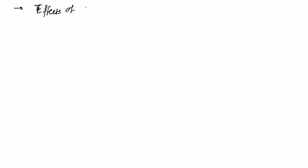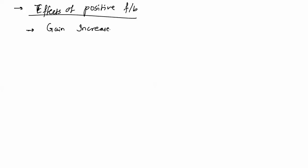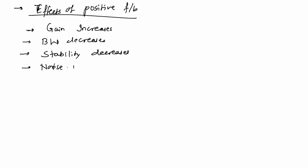Now the effects of positive feedback are the reverse of negative feedback. First, gain increases. Second, as gain increases, bandwidth decreases. Third, stability decreases — the circuit becomes more unstable. Fourth, noise increases. Fifth, distortion increases. These are the effects of positive feedback, which are reverse to the effects of negative feedback.